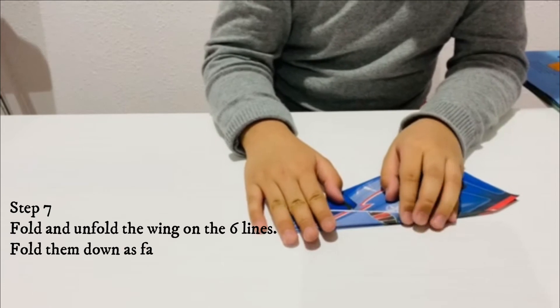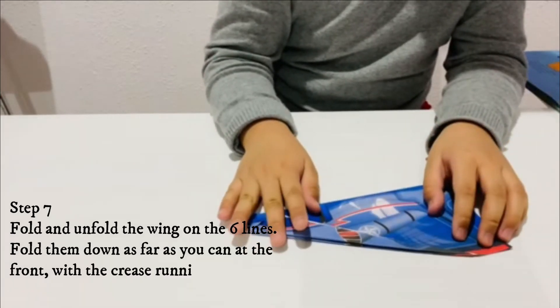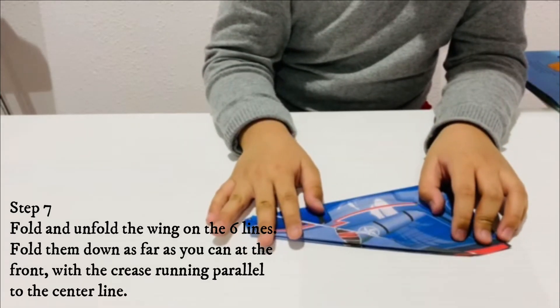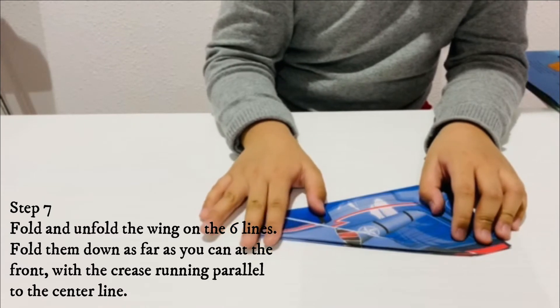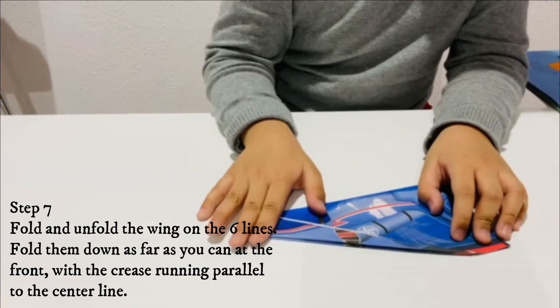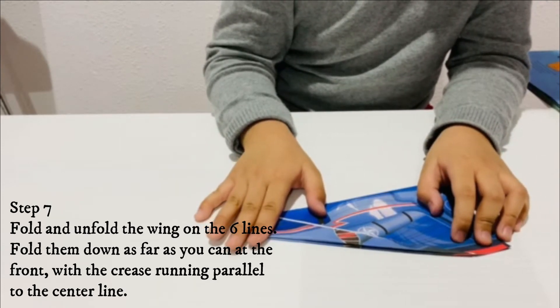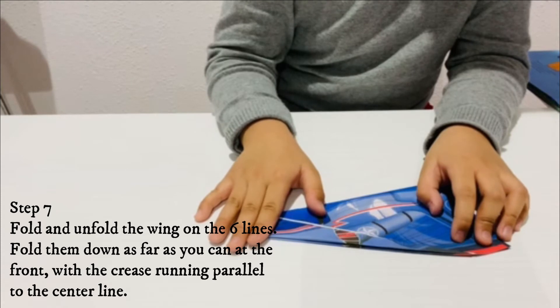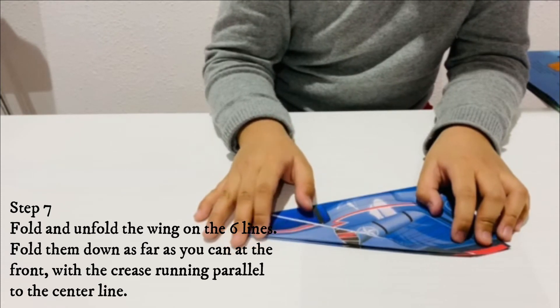Step 7: Fold and unfold the wings on the six lines. Fold them down as far as you can at the front with the crease running parallel to the center line.